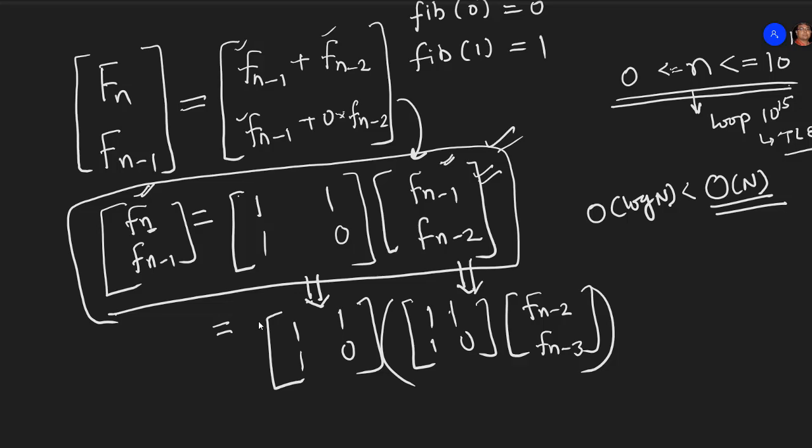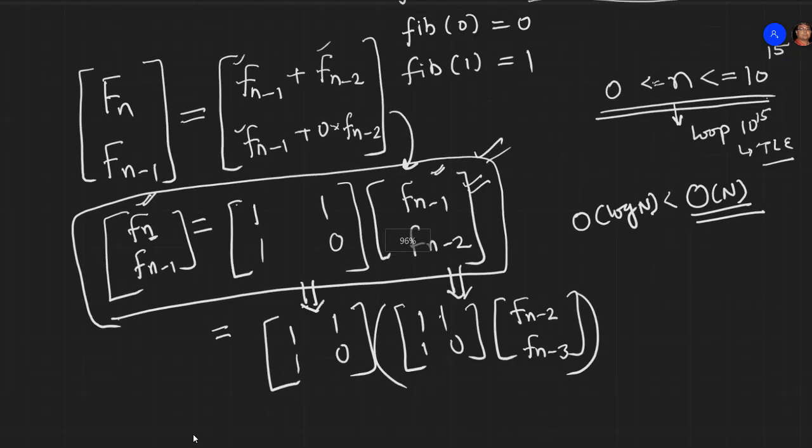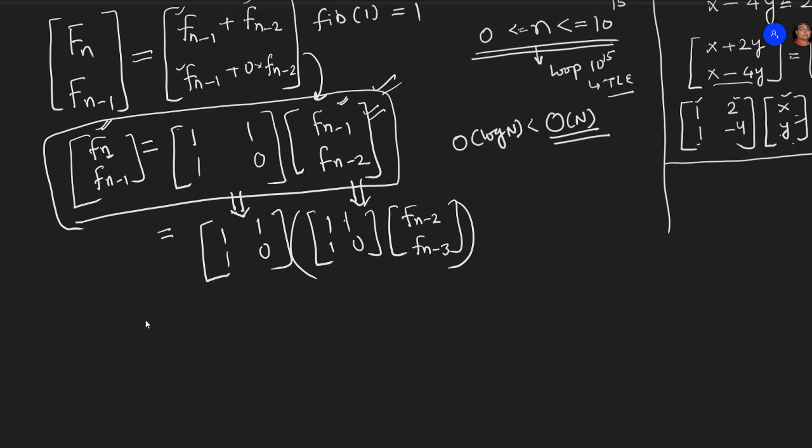What it means is, I have just brought it to another form where we are just saying that this has become equal to 1, 1, 1, 0 whole square, this matrix whole square into f of n minus 2 and f of n minus 3 in multiplication.